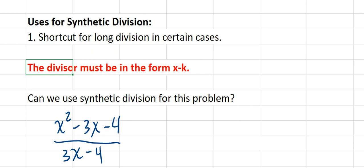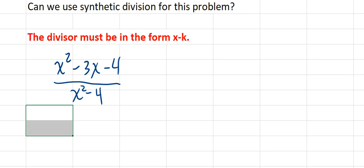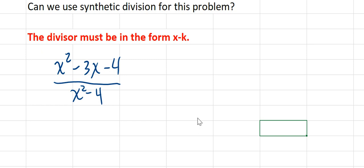Here's another example which does not fit the requirement because the lead coefficient on x is not 1, it's 3. And still another example where the lead coefficient is 1, but the power on x — the degree of the divisor — is not 1; it's not linear. You could factor that divisor as a difference of squares and then perform synthetic division with either factor. But if it were x squared plus 4, it wouldn't fit the requirement, and you'd be better off doing long division.